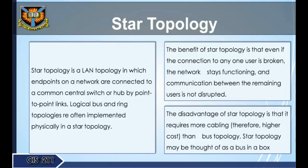Star topology is a LAN topology in which endpoints on a network are connected to a common central switch or hub by point-to-point links. Logical bus and ring topologies are often implemented physically in a star topology. The benefit of star topology is that even if the connection to any one user is broken, the network stays functioning and communication between the remaining users is not disrupted. The disadvantage is that it requires more cabling, therefore higher cost than bus topology. Star topology may be thought of as a bus in a box.